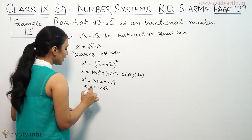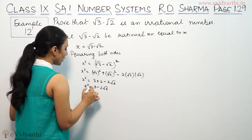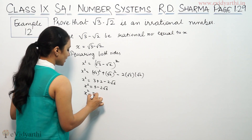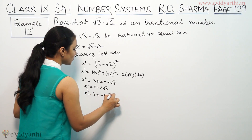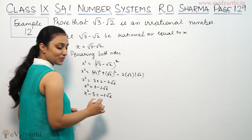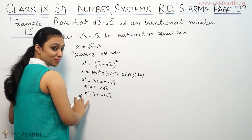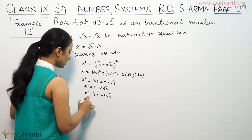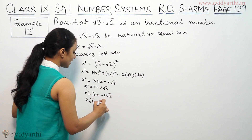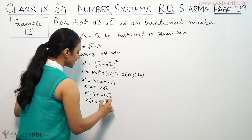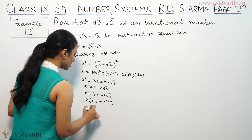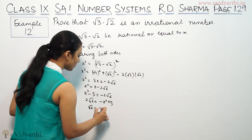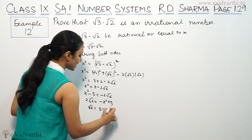So this will be x squared minus 5 equals minus 2 root 6. Taking this across, minus 2 root 6 becomes 2 root 6 equals minus x squared plus 5. So root 6 equals 5 minus x squared, all divided by 2.